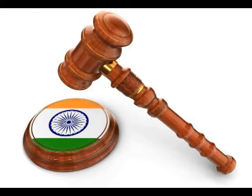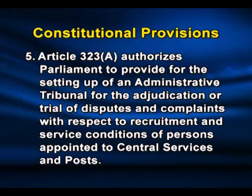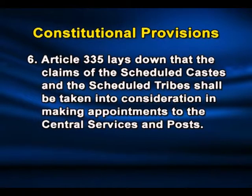New All India Services can be created by Parliament only after the Rajya Sabha passes a resolution supported by a two-thirds majority saying it is necessary in the national interest. The All India Judicial Service shall not include any post inferior to that of a district judge. Though the 42nd Amendment in 1976 made provision for the creation of an All India Judicial Service, no such law has been made so far. Article 323 authorizes Parliament to provide for the setting up of an administrative tribunal for adjudication of disputes with respect to recruitment and service conditions of persons appointed to central services. Article 335 lays down that the claims of Scheduled Castes and Scheduled Tribes shall be taken into consideration in making appointments to central services and posts.